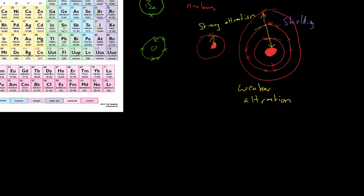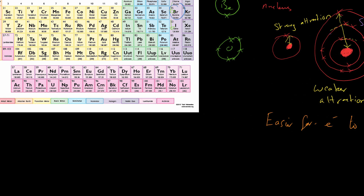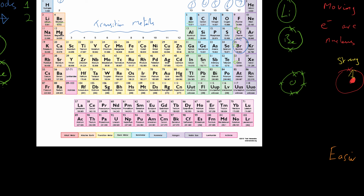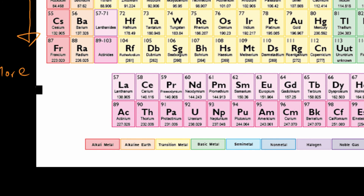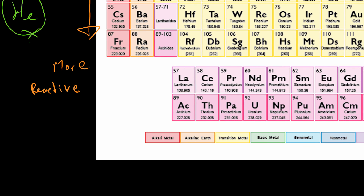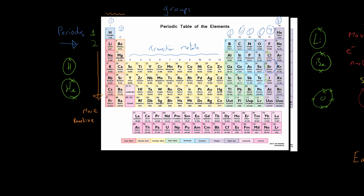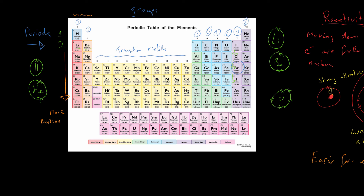For metals in groups one and two, they react by losing those outer electrons. As you move down the group, those electrons are further from the nucleus with weaker attraction, making it easier for them to leave. Since losing electrons is how metals react, this makes metals more reactive as you move down the group.